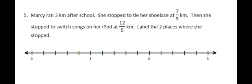And I have one more question. This one says, Marcy ran 3 kilometers after school. She stopped to tie her shoelace at 7 fifths kilometers. Then, she stopped to switch songs on her iPod at 12 fifths kilometers. Label the two places where she stopped. So, we have a number line, and it's showing the whole numbers 0 through 3. Each whole number has been divided into 5 equal pieces. So, each mark represents a fifth.